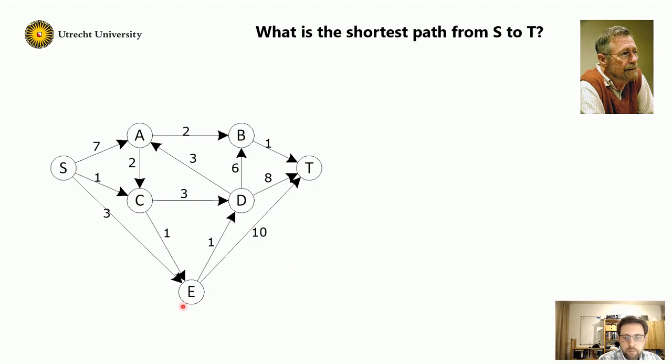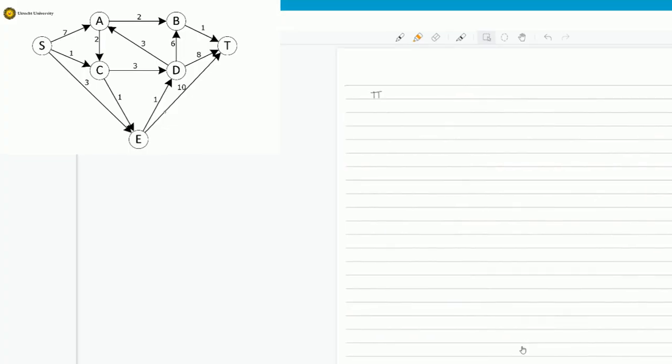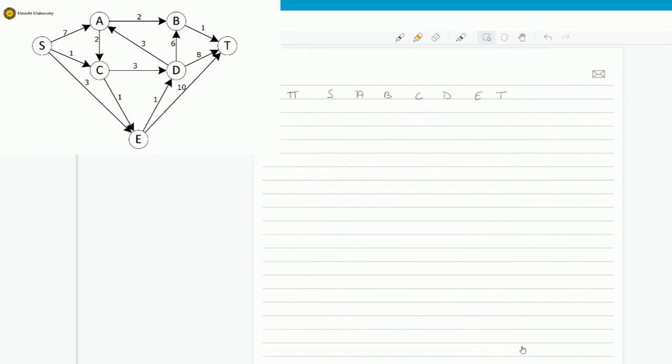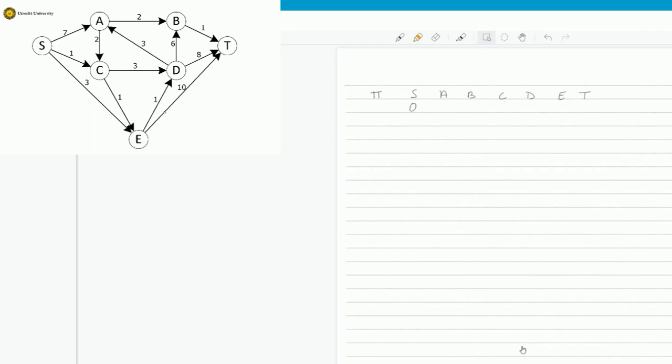Let's apply it on an example. So let's apply the algorithm. We create a table first. The first element is PI for parent, and then we list all the nodes of the graph: S, A, B, C, D, E and T. Next, we look to the distances. So the distance from S to S is 0, and for all the others it is infinite, because we initialize.